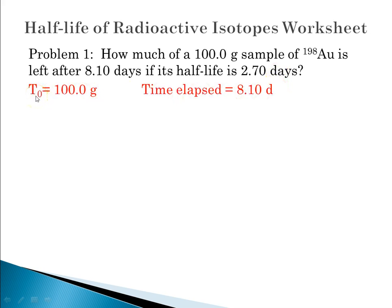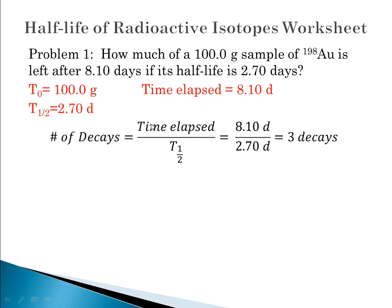So we'll start by laying out our variables. T₀ we had 100 grams. Time elapsed is 8.1 days. The time for a half-life to occur is 2.70 days. So then we can take our equation. The number of decays equals time elapsed over the half-life of time. In this case, it's 8.10 days divided by 2.7 days, and that leads us to learn that three decays took place.